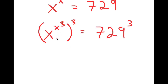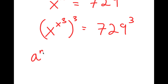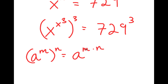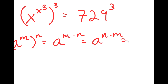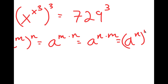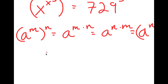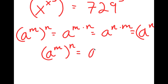Now, if I have something in the form a to the power of m to the power of n, this is the same thing as a to the power of m times n. And m times n I can also rewrite as n times m. So if a to the power of m to the power of n equals a to the power of m times n, then a to the power of n times m should also equal a to the power of n to the power of m. So in simpler terms, a to the power of m to the power of n is equal to a to the power of n to the power of m.